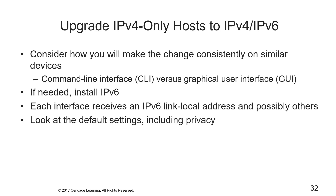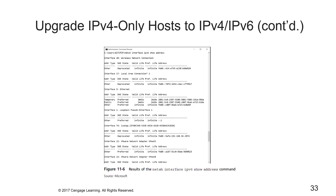When upgrading v4-only hosts to v4/v6, you need to consider how to make the change consistently on similar devices — using a CLI or GUI. Although there are hundreds of brands and types of hosts to upgrade, one of the easier examples is Windows PCs. The individual commands and syntax vary greatly by operating system and function, so rather than memorizing them all, focus on understanding the general commands to achieve the functionality you want. You'll need to look at each interface that receives an IPv6 link-local address and review the default settings including privacy.